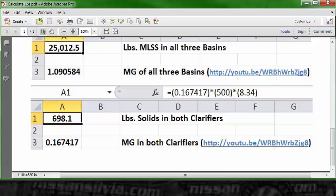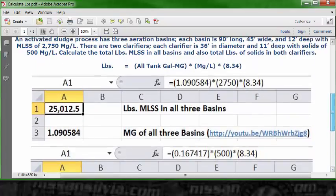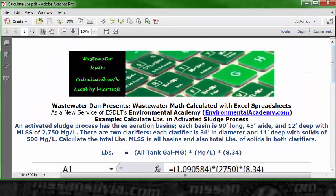0.167417, close parenthesis, multiplication, open parenthesis, 500, close parenthesis, multiplication, open parenthesis, 8.34, close parenthesis. Press enter or the return key, and you're going to get 698.1 pounds of solids in both clarifiers. So that's the pounds for the aeration basin and the pounds for the clarifiers, which is the answer to this problem.